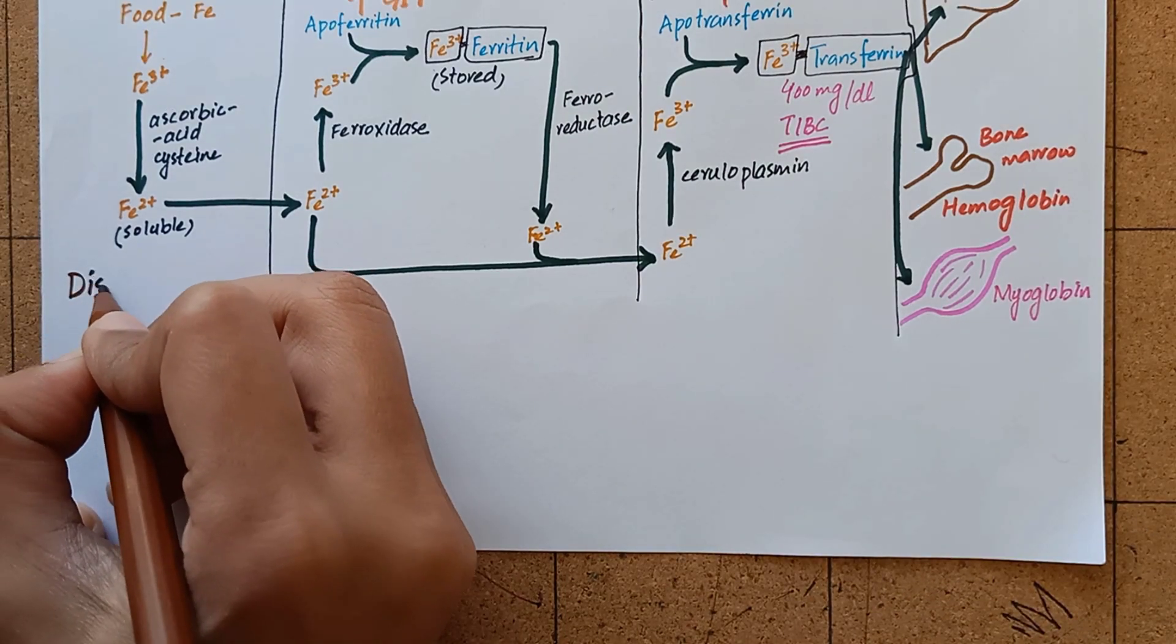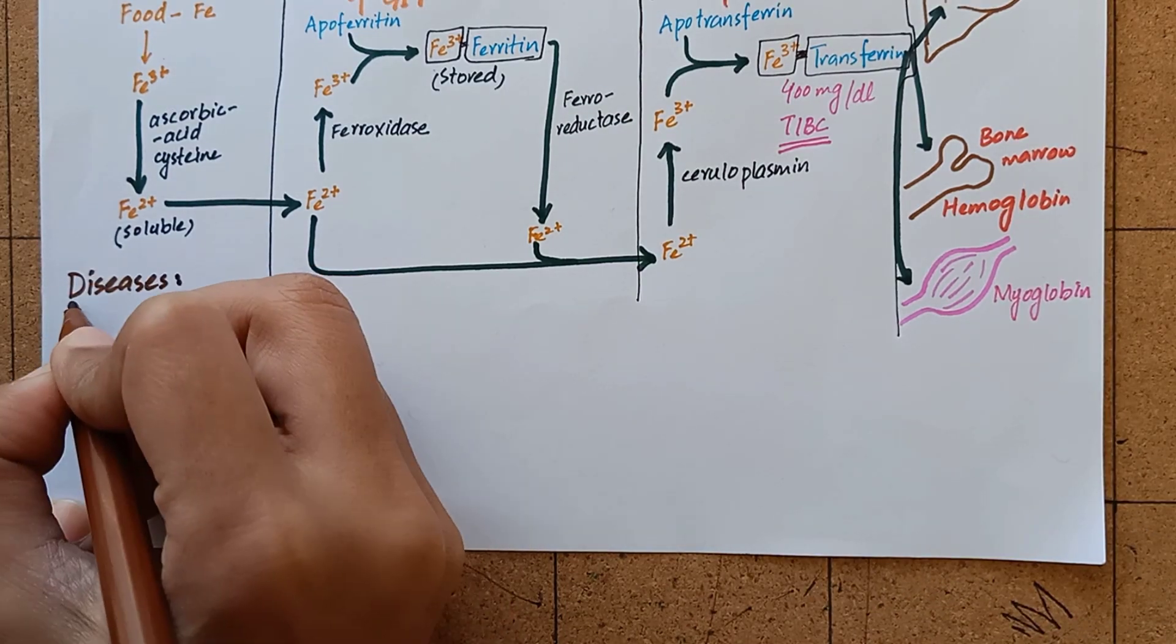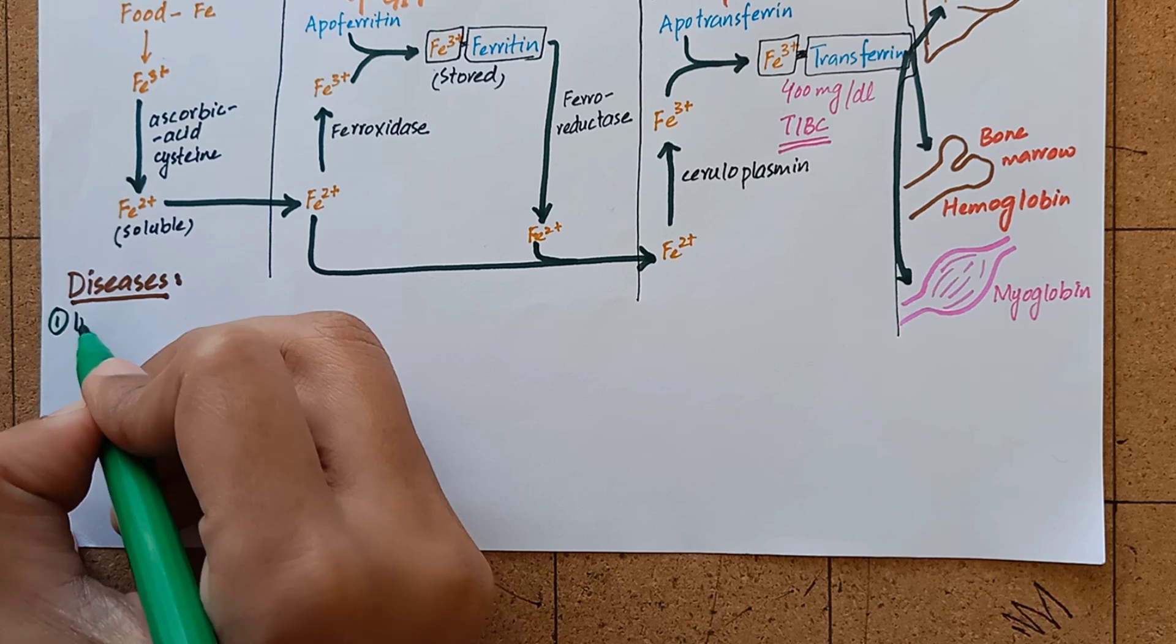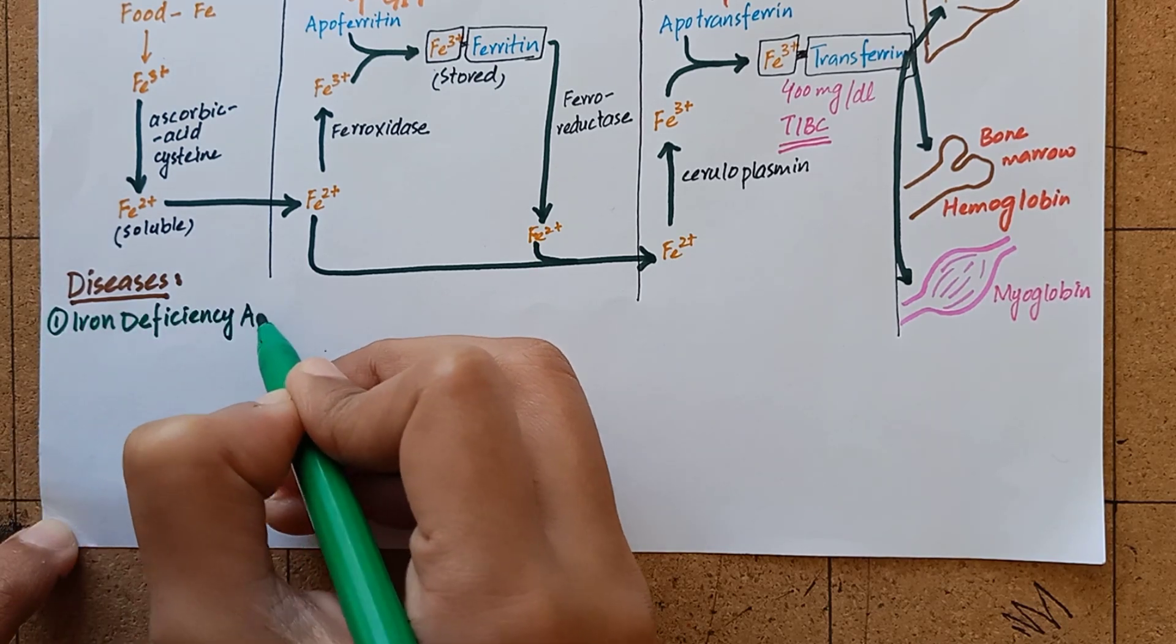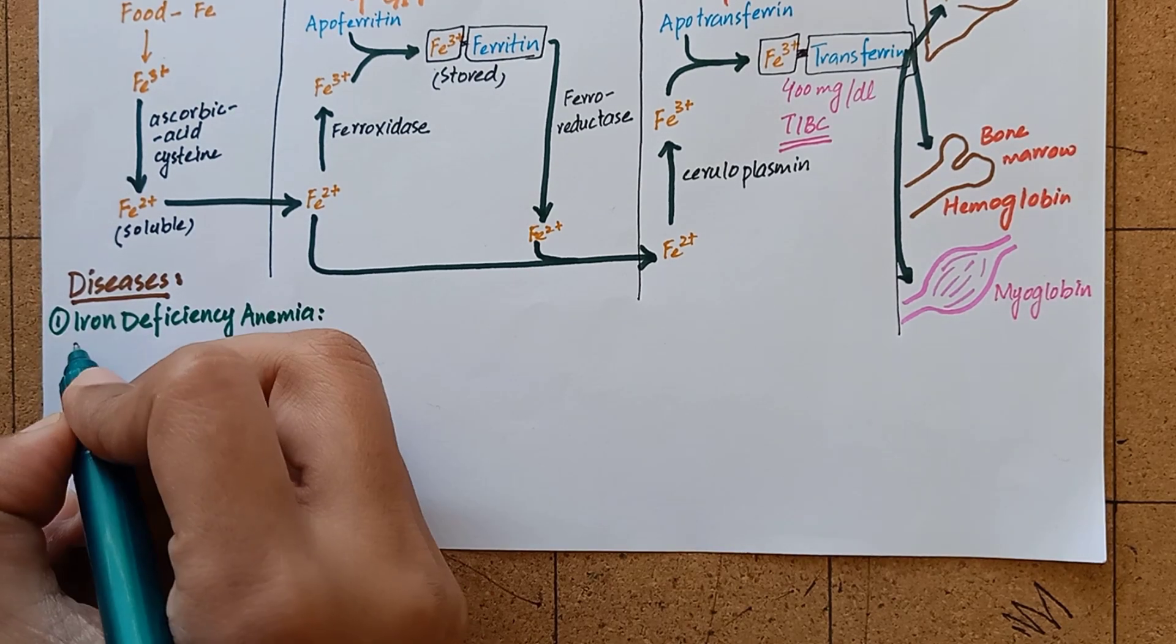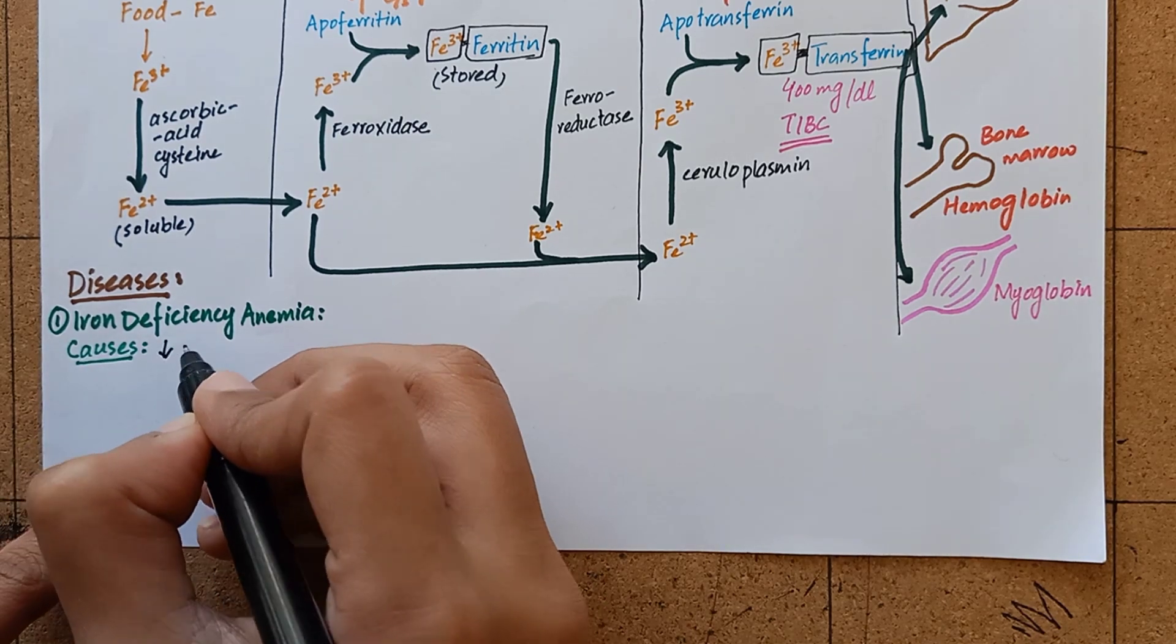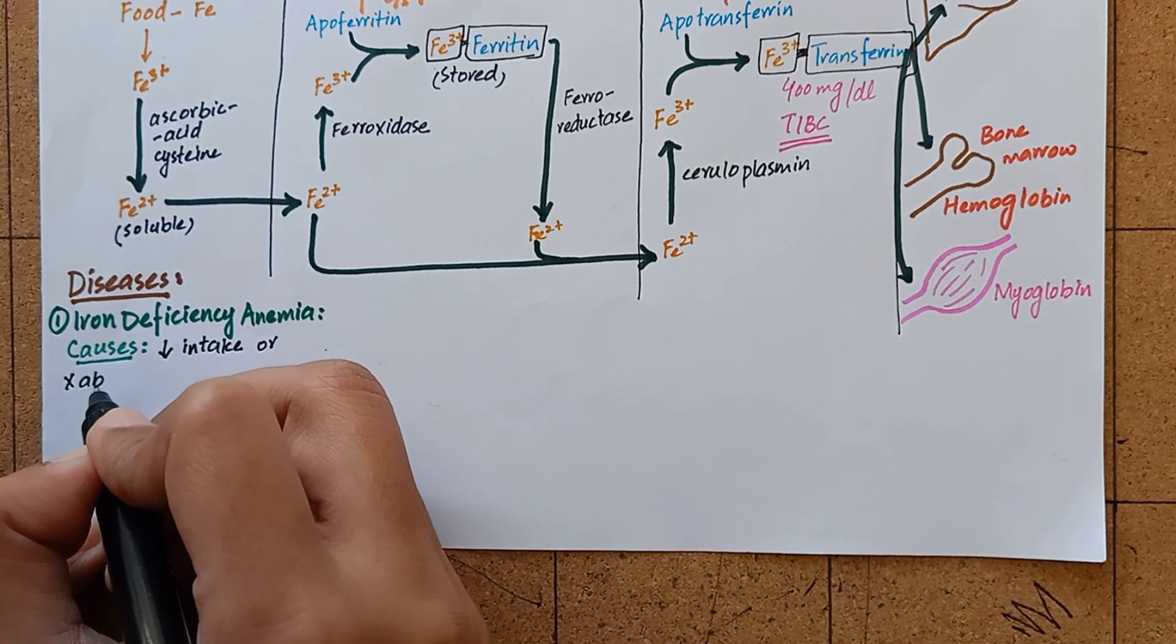There are three disease states associated with iron. First is iron deficiency anemia. There are several factors that contribute to iron deficiency anemia. These include inadequate intake or defective absorption of iron,